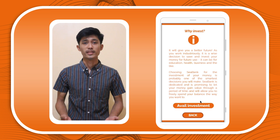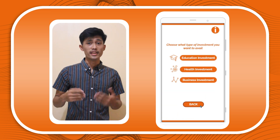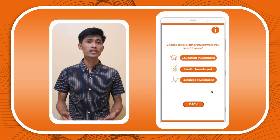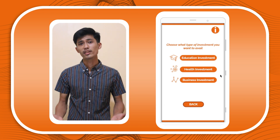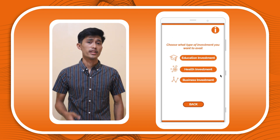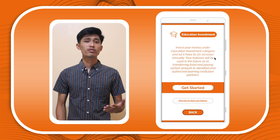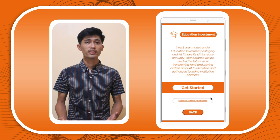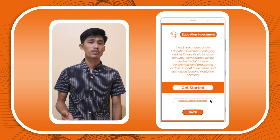Tap the avail button and the application will let you choose what type of investment you want to avail. Say for example you choose education — a brief overview of that investment type will appear. There is also a button for you to check your balance.